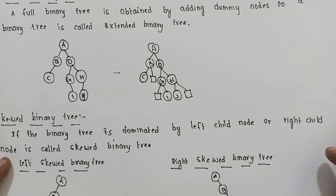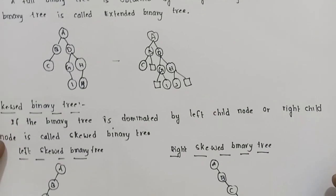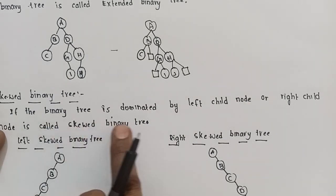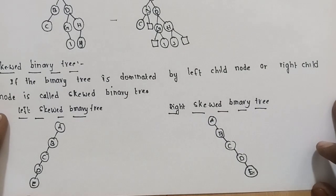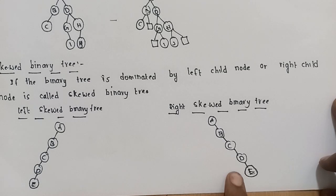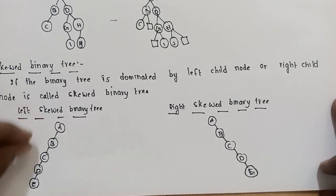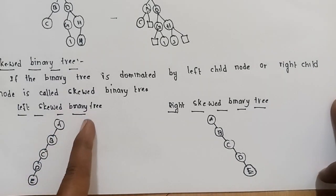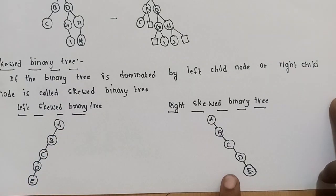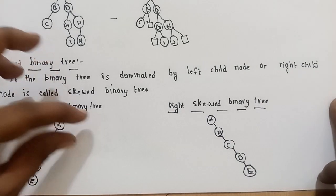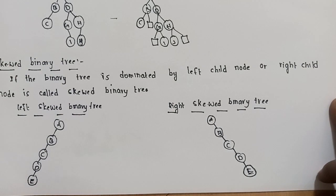Next is Skewed Binary tree. If the binary tree is dominated by left child nodes or right child nodes, it is called a skewed binary tree. If only left child nodes dominate, we have a left skewed binary tree. If only right child nodes dominate, we have a right skewed binary tree. So there are two types: left skewed and right skewed.